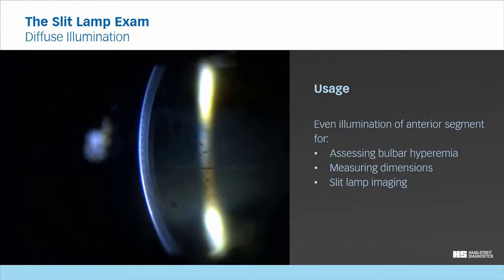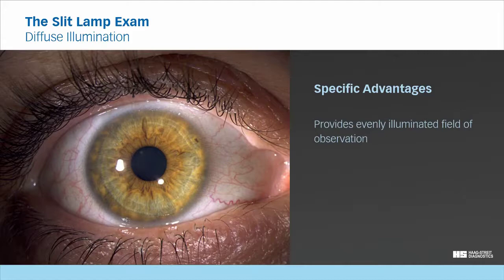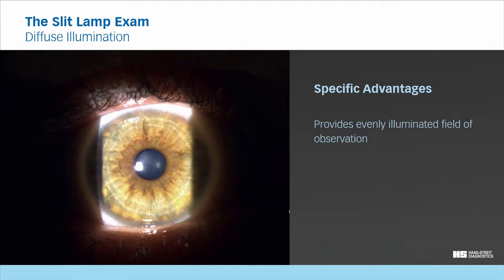Specific advantages. The specific advantage of diffuse illumination is that it provides a uniform light distribution which gives you an overview of a wide field. In comparison, here is the same eye illuminated with direct focal illumination.